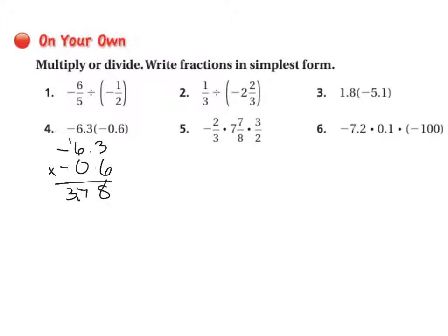And then we'll move on to number 5. We can multiply these in any order, so I am going to multiply negative 2/3 times 3/2 because I see that they're reciprocals of each other. Let's cross cancel: those two equal 1 and those two equal 1, so I end up with a negative 1 because 1 times 1 is 1, 1 times 1 is 1, so it's a negative 1. And so I've got negative 1 times 7 and 7/8, so that equals negative 7 and 7/8.